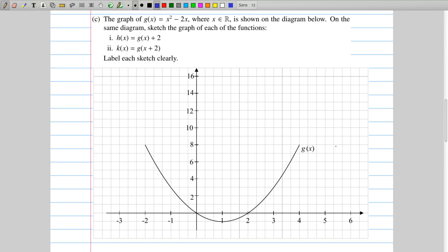Part c gives us a graph g of x, which is x squared minus 2x. And we're asked to sketch the graph of two more functions, h of x and k of x, on the same diagram. Now, there's two ways of going about this. One way is just to brute force this and say, well, if h of x is g of x plus 2, we can actually work out then that h of x is x squared minus 2x, which we know is gx, and then add a 2 on and then try out a couple of different values of x and see what happens.